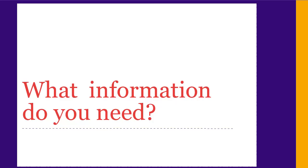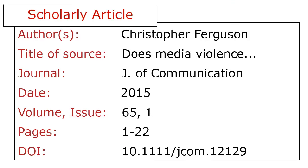Next, we'll look at what information you need to create a citation. The information you need depends on the type of source you're using. For a scholarly journal article, you'll need the author and title of the article, the journal the article is published in, and the date of publication. You'll also need the volume, issue, and pages. If it's available, give the DOI, which is a unique ID number assigned to the article. If the DOI isn't available, list the URL of the article webpage.